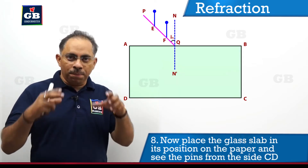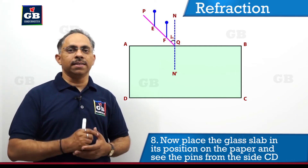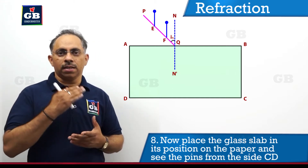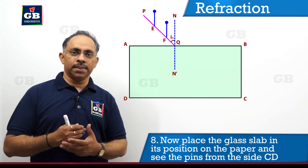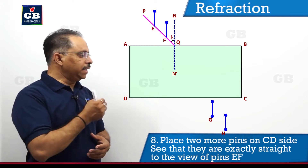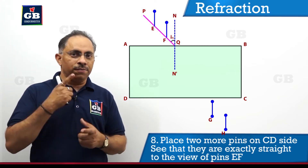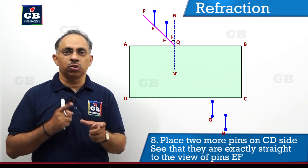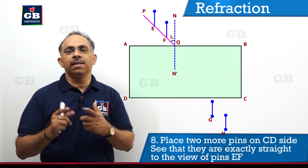We will place the glass slab back on its traced boundaries ABCD. After placing it, we look at the two pins at E and F from the CD side of the glass slab, and then place two more pins, G and H, such that all four pins — E, F, G, and H — appear to be in the same straight line when viewed from side CD.